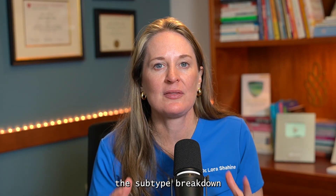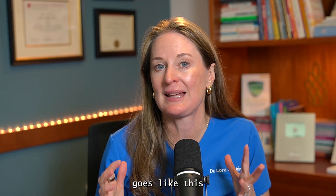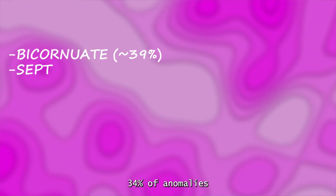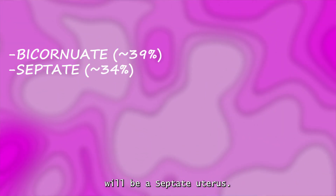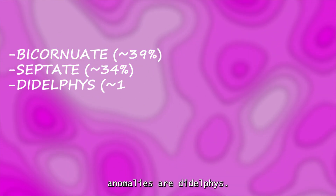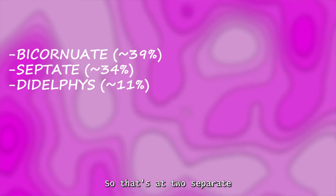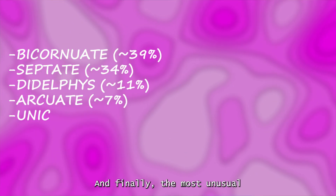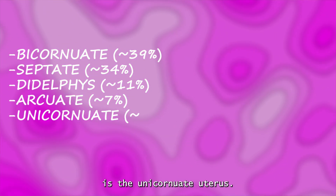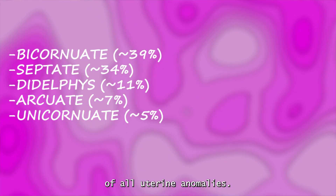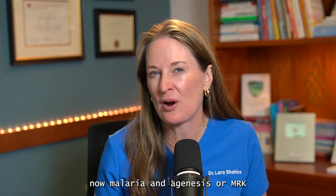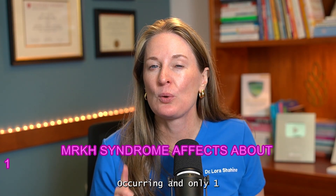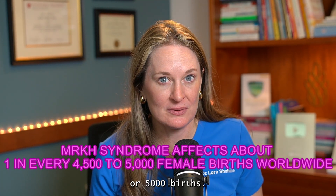If you have a uterine anomaly, the subtype breakdown goes like this: 39 percent will be a bicornuate uterus, 34 percent a septate uterus, 11 percent didelphus, seven percent arcuate uterus, and five percent — the most unusual — is the unicornuate uterus. Mullerian agenesis, or MRKH syndrome, is extremely rare, occurring in only one in 4,500 to 5,000 births.